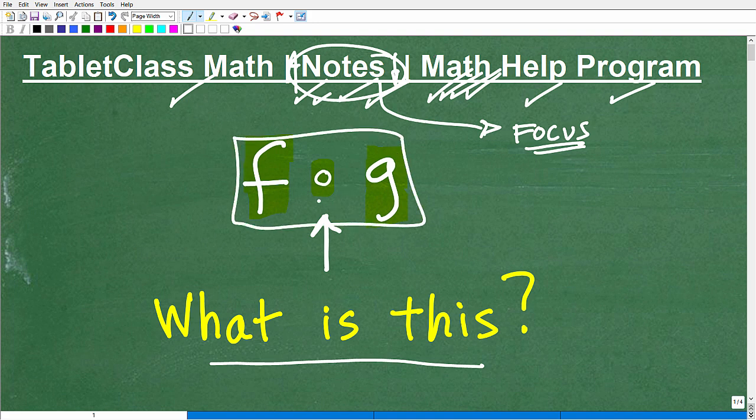Okay, so what is this? Now, it's not the word fog, although it kind of could look like that. It's like f-o-g. It's not the word fog because this little circle here is a little circle. It's like that. Okay? It's not like a dot, like a point. It's actually written kind of just like this.